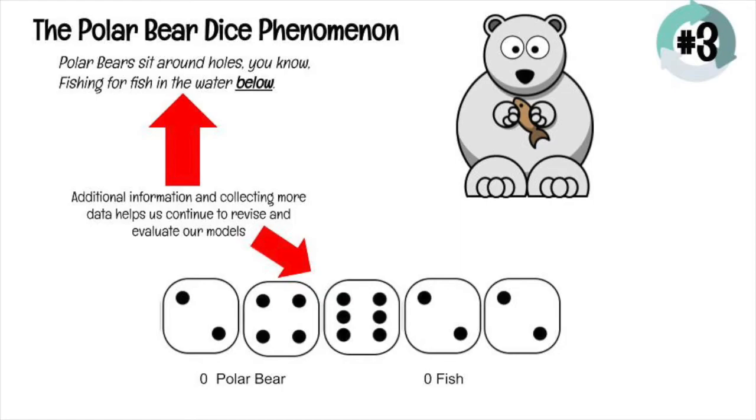You might have to revise your model. If you were guessing that a certain dot represented polar bear or that a certain dice number represented polar bear and this doesn't fit with your guess, try a new guess, revise your model to see if we can get it to fit with the new information you received.